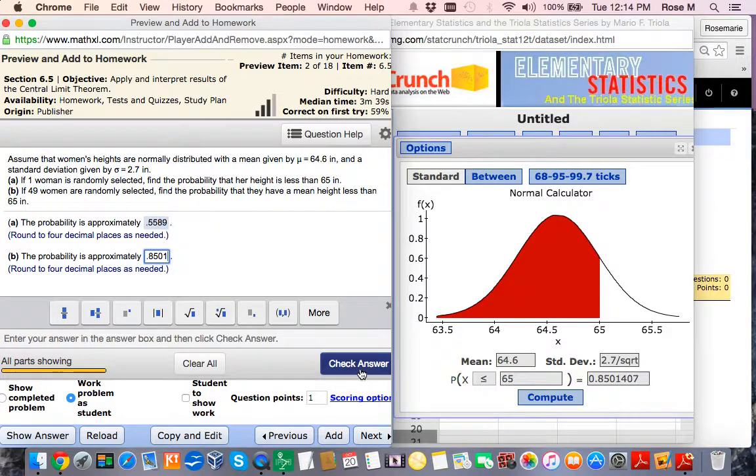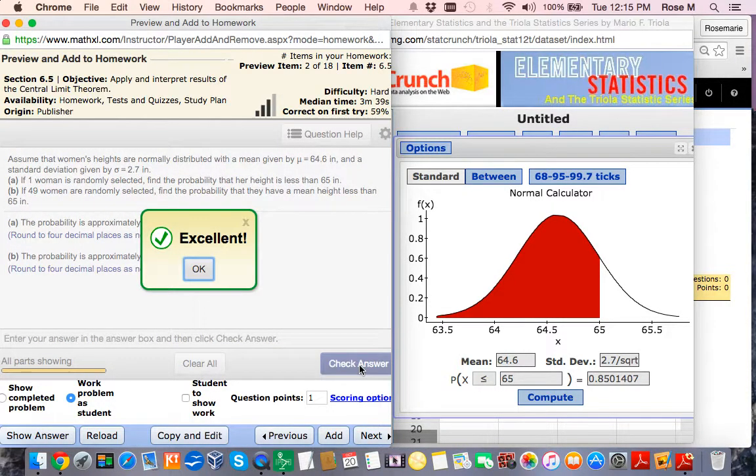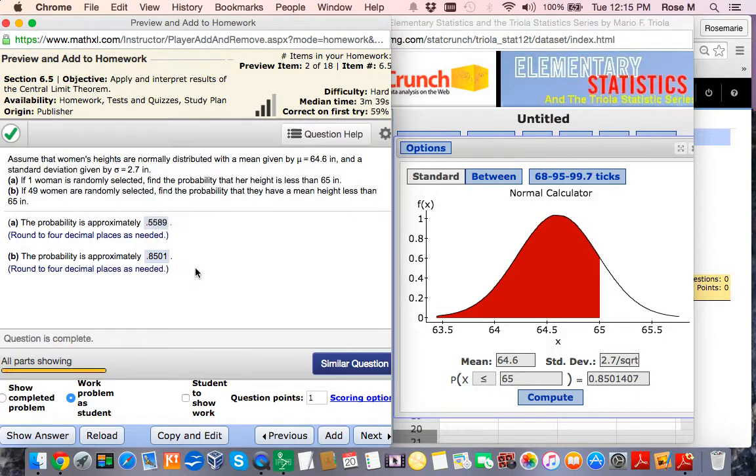So that's all you have to do when you're applying the Central Limit Theorem. The easiest way to do this is just using StatCrunch, and remember that your standard deviation changes when you're applying the Central Limit Theorem, because the sample size is no longer just one. I hope this helps, everyone.